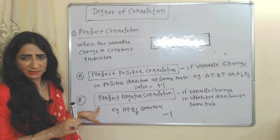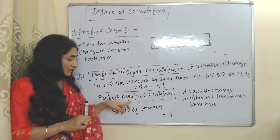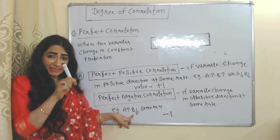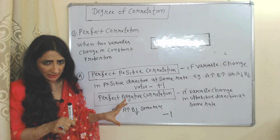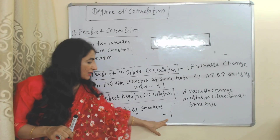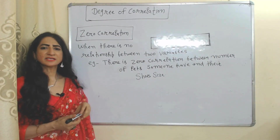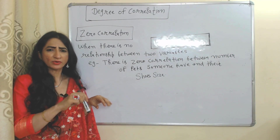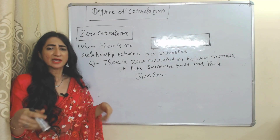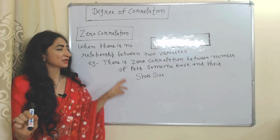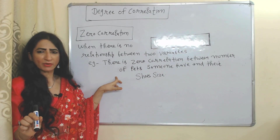Perfect negative correlation: if variables change in the opposite direction at the same rate, it is called perfect negative correlation. For example, if one increases then the other decreases at the same rate. Its value is always equal to minus one. The second degree is zero correlation — when there is no relationship between two variables.